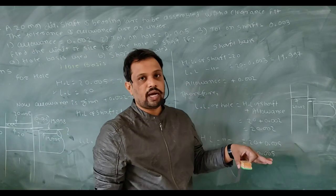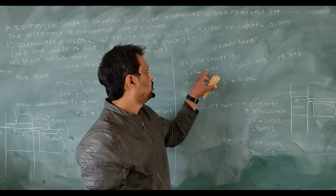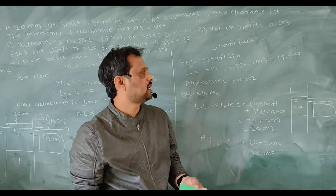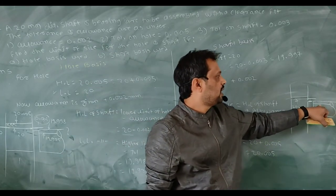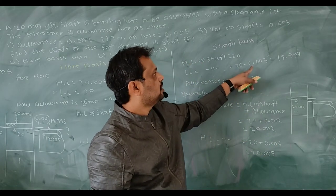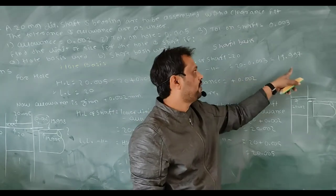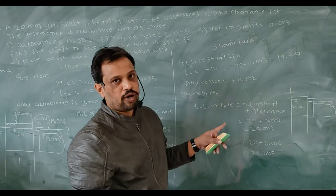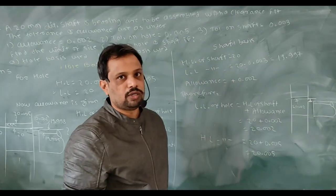In shaft basis system, the shaft upper deviation is zero, so the higher limit of shaft is 20mm — the nominal size. For calculating the lower limit of shaft: higher limit minus tolerance on shaft = 20 − 0.003 = 19.997mm. The allowance given is 0.002 in this assembly also.